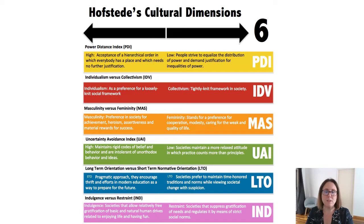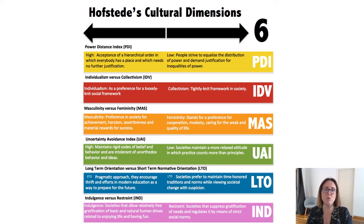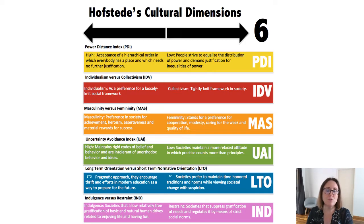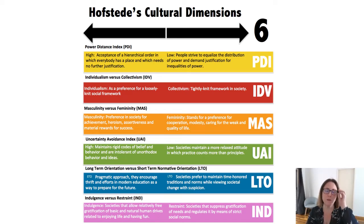In terms of power distance, at the high level there are hierarchies between people and a lot of formalized structures based on status and role. Whereas in countries with low levels of power distance, people tend to try to equalize power and distribute it evenly across people within society, rather than just focusing on status and role.